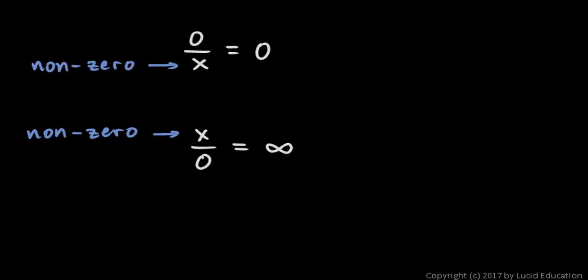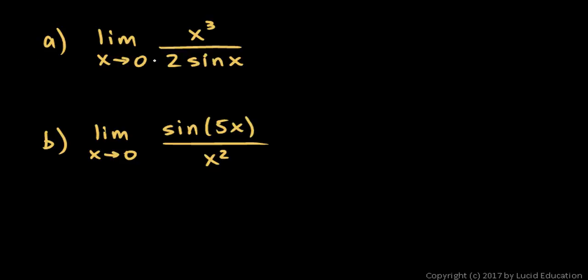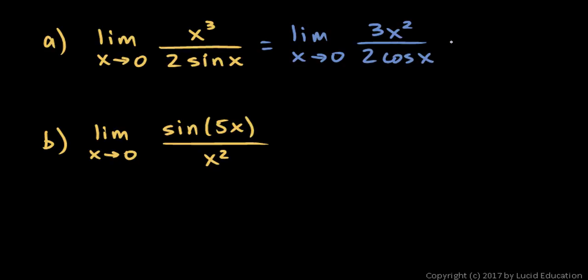Let's take a look at an example. In part A, the limit as x approaches 0 of x cubed over 2 sine x — you should be able to see that putting in x equals 0 leads to 0 over 0. So if we take the derivative of the top and bottom, we have the limit as x approaches 0 of 3x squared over 2 cosine x. Substituting in 0, we get 0 over 2 times cosine of 0, which is 1 — so 2 times 1 — giving us 0 over 2, which is 0. And we stop.